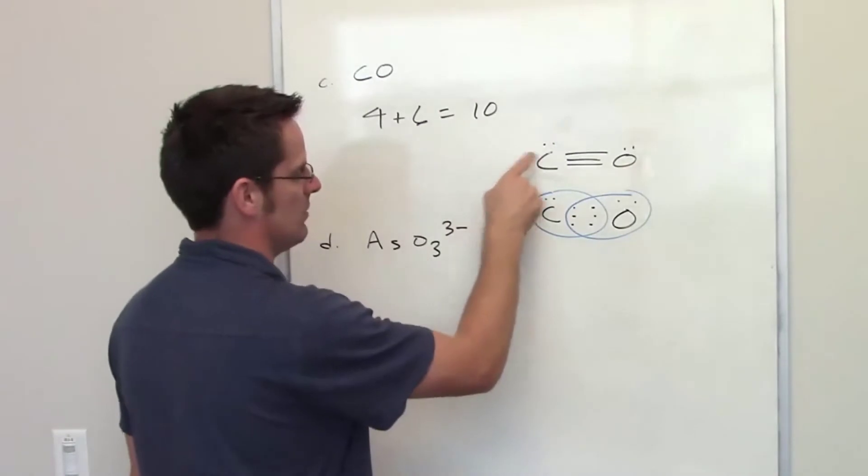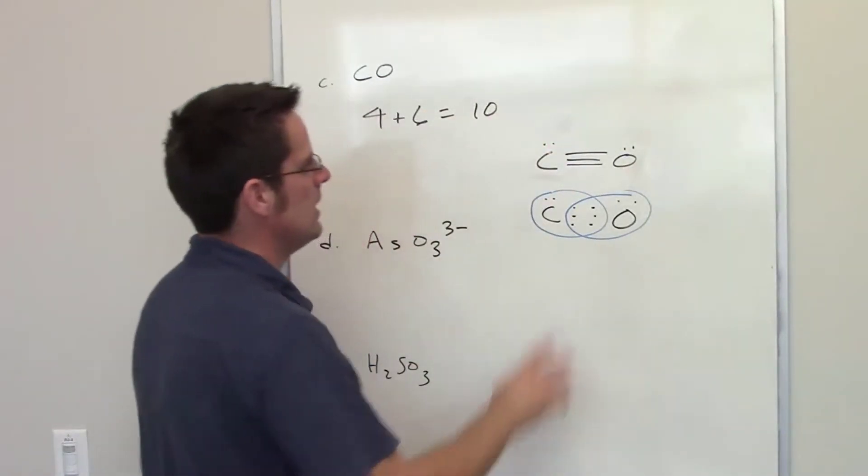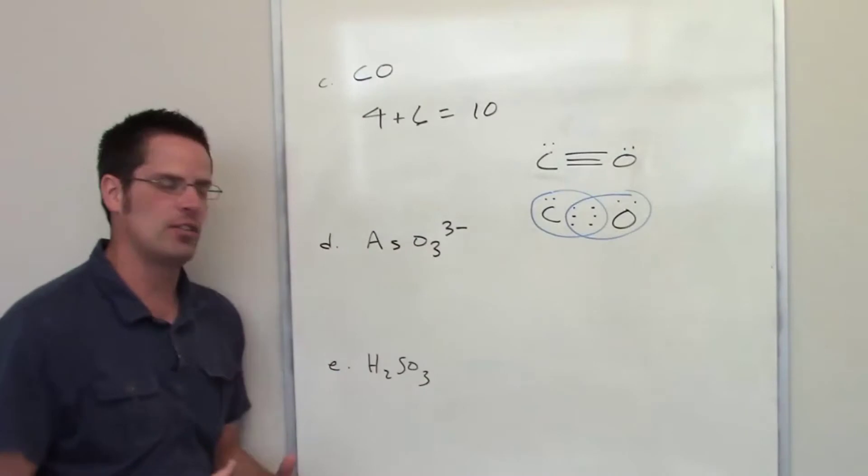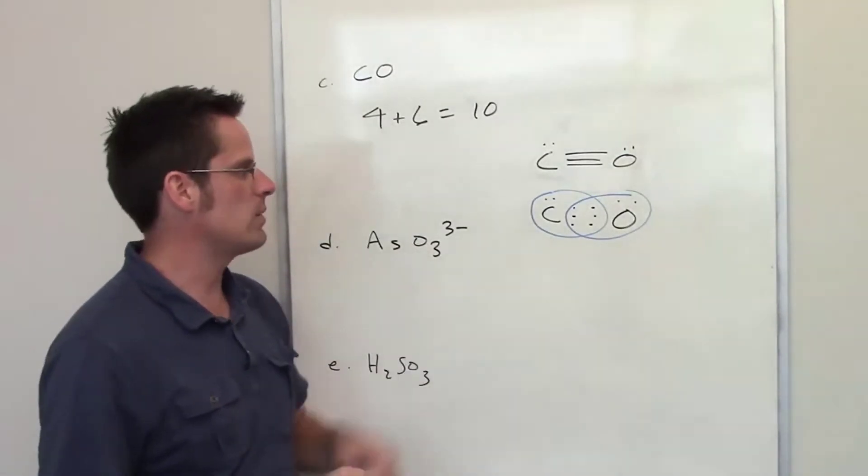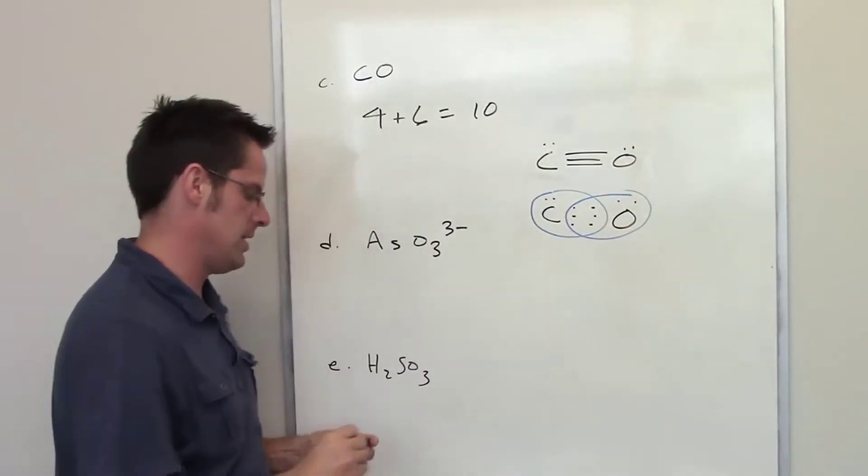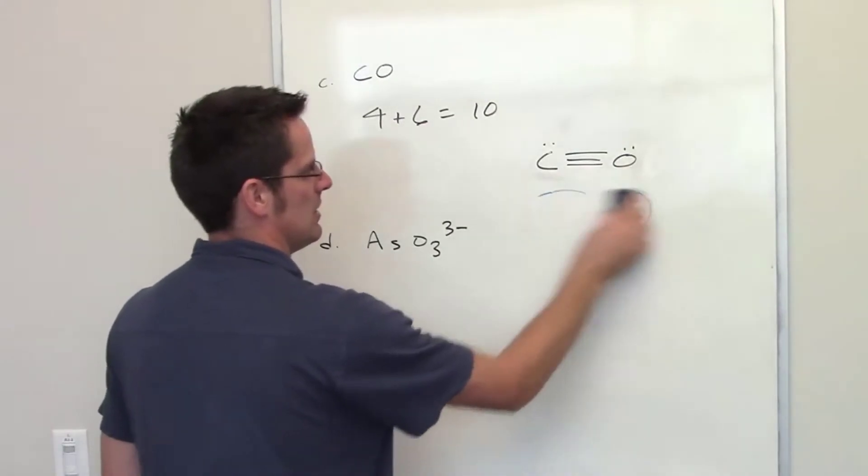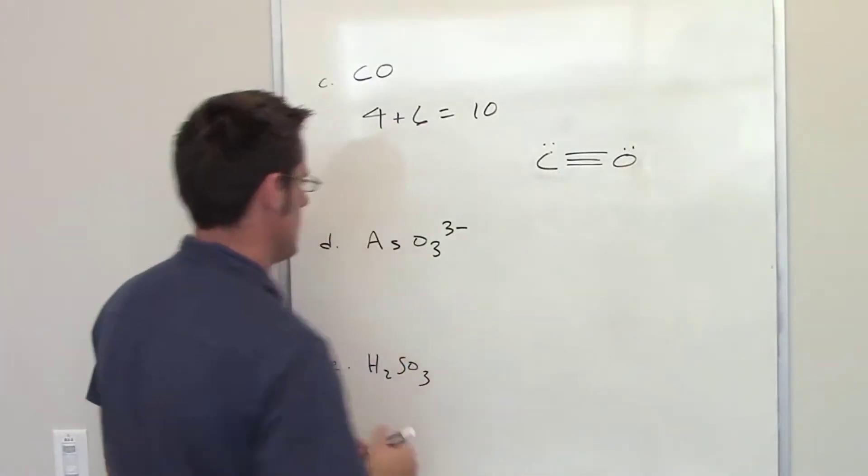So I've now laid down ten electrons. I've got a set of lone pairs on the carbon, set of lone pairs on the oxygen. Everybody feels as if it has a full octet, so that would be a Lewis structure for carbon monoxide.